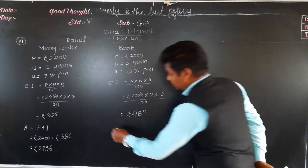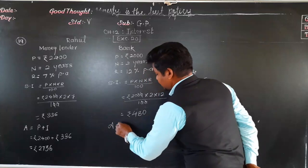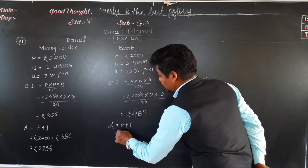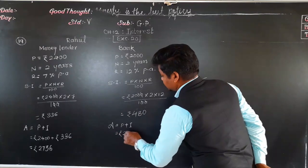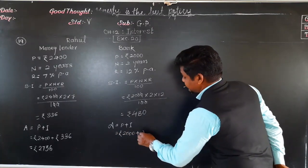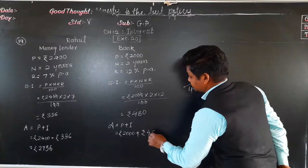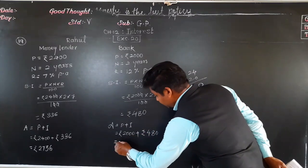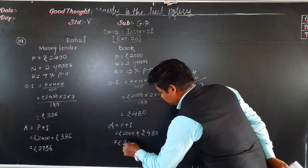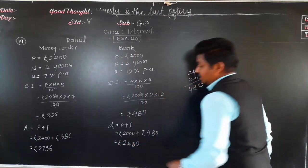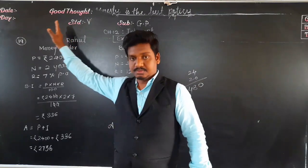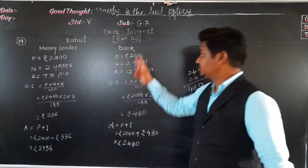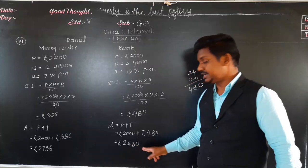So the amount for the bank loan is P plus I = 2000 plus 480 = rupees 2480. In summary: to the money lender Rahul has to return rupees 2736, and to the bank he has to return rupees 2480.